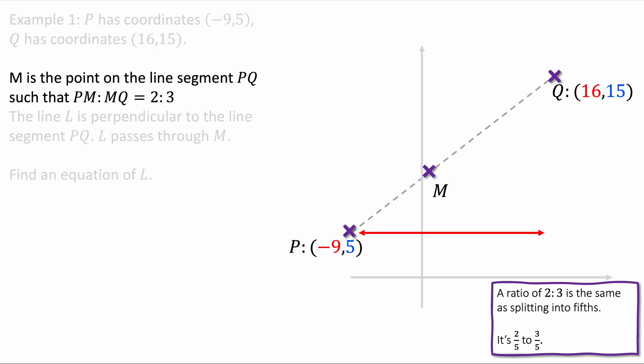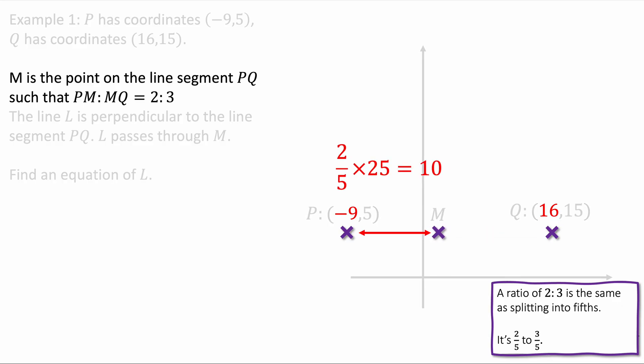We'll start with the x distance here. We're going from -9 to 16. That is 25 units across. I want to go two-fifths of 25 across. 25 times two-fifths is 10. That distance is 10. -9 plus 10 is 1. So the x-coordinate here is 1.